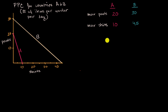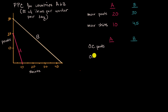So let's do that next. This is country A and this is country B. Let me calculate the opportunity cost of pants, and let's also calculate the opportunity cost of shirts. Pause this video and see if you can figure that out — what are the opportunity costs of pants and shirts in countries A and B, and fill out this table.